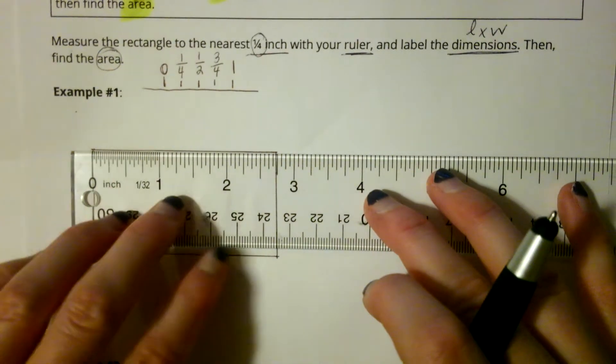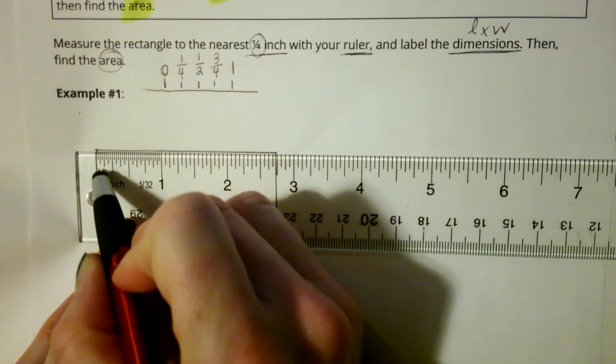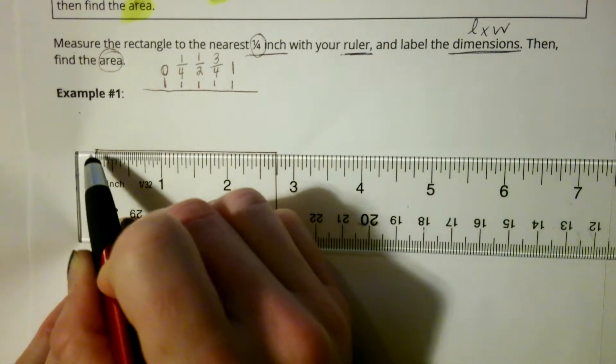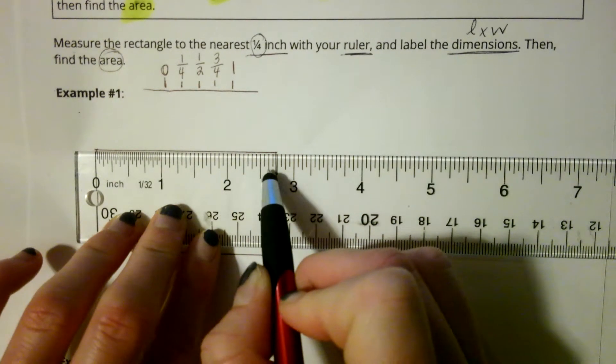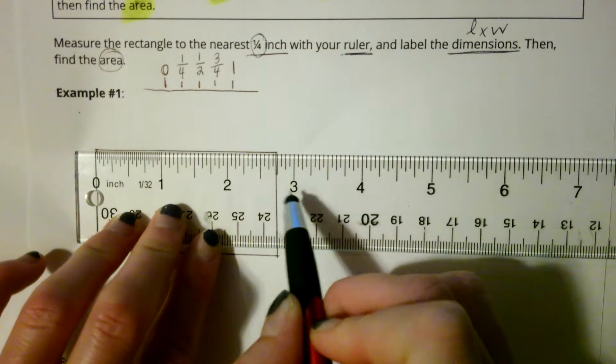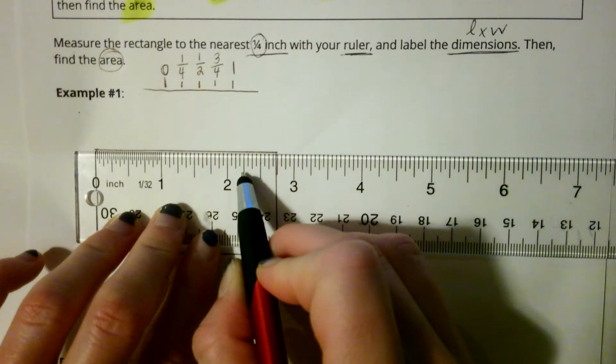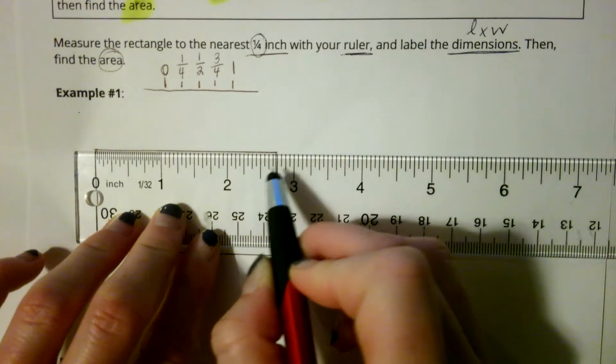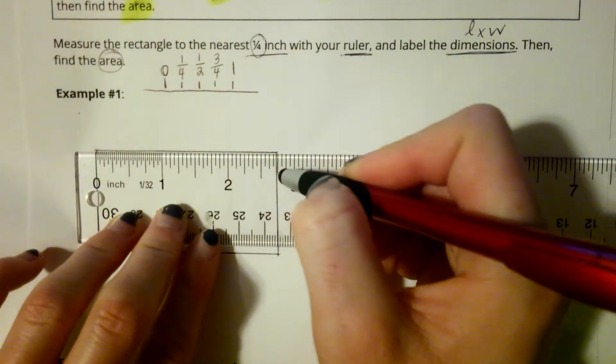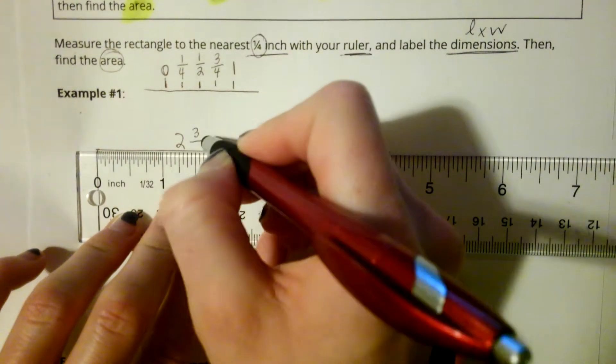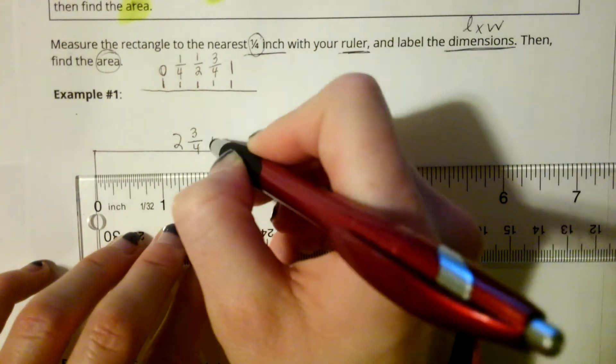So let's measure the length. I'm starting right at zero. Even though this is the end of my ruler, I'm starting right at zero. And I'm going, going, going, okay, it's a little bit more than two. It's not quite to three. And I see this would be one-fourth, two-fourths or a half, and three-fourths. So it's closest to the three-fourths tick mark. So that will be two and three-fourths inches long.